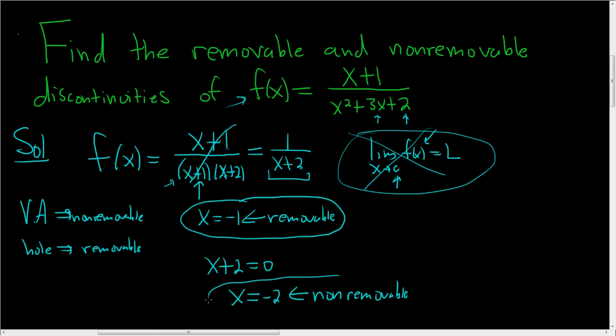And that's it. So again, for a rational function, all you do is simplify, factor, and cancel. Anything that cancels gives you a hole, and holes in rational functions are always removable. Then you find your VAs, and VAs are always non-removable. I hope that helps.